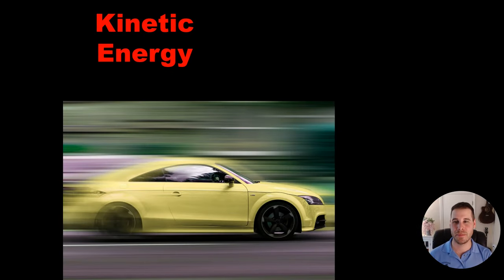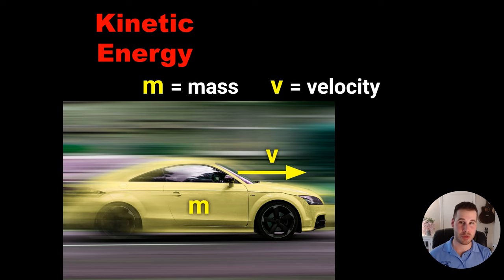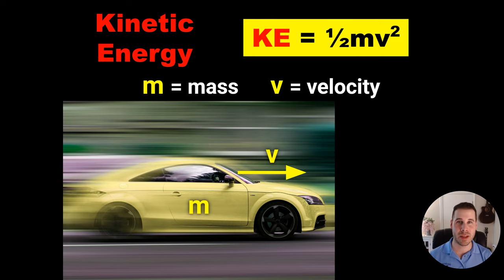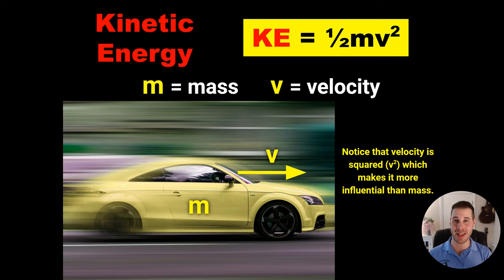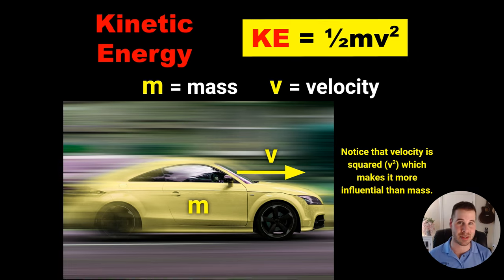That's kinetic energy at a glance. How do we calculate how much is in an object? It's based on mass and velocity, combined in this equation: kinetic energy equals one-half times mass times velocity squared. Notice that velocity is squared, which means velocity is more important than mass. If you double the mass, you get twice as much kinetic energy. But if you double the velocity, the squaring turns that into four times as much kinetic energy.